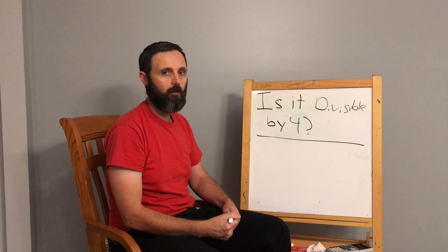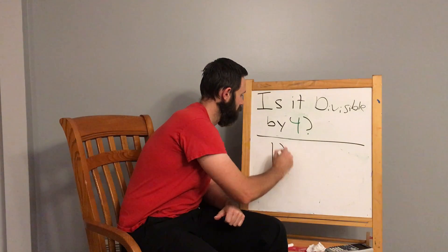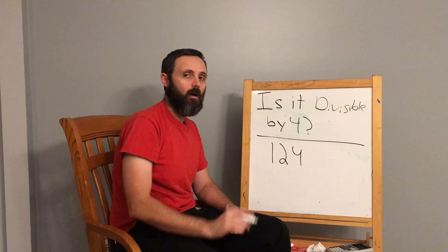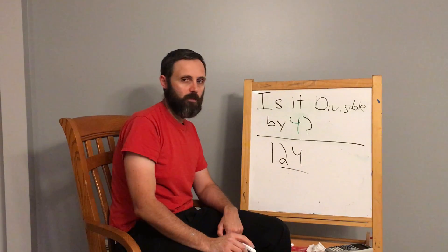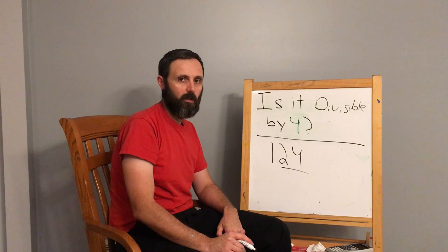Now we're looking at: is it divisible by 4? Take a number like 124. All you got to do is look at the last two digits and go up by the next multiple of 20.